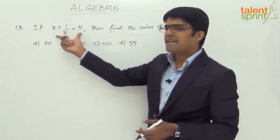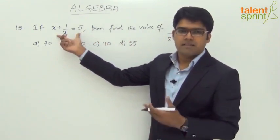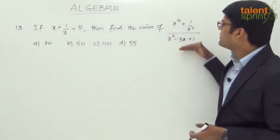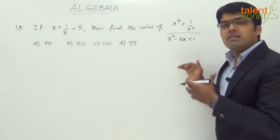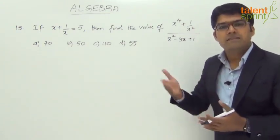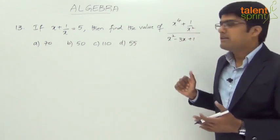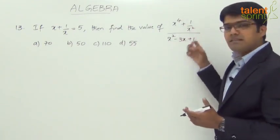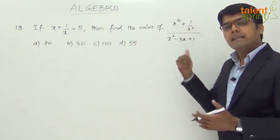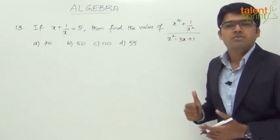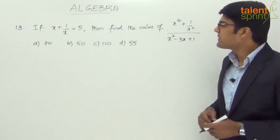As usual, x plus 1 by x equals to 5. That equation is given and we need to find out the value of this one, which is not a regular one. We have already seen some of the identities, but we directly cannot apply any of those identities to get the answer here. We probably have to simplify this first, get a simpler format and then see if we can use the identities to get the required answer.